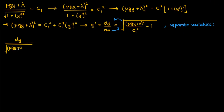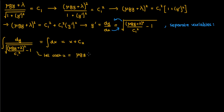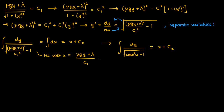After separating variables and integrating, the right-hand side gives x plus c2, where c2 is another integration constant. The left-hand side is more tedious to integrate, but we can use a convenient substitution: replace (mu g y plus lambda) over c1 by cosh u. Differentiating this substitution gives dy equals c1 sinh u over mu g times du. Substituting dy into the integral, we use the hyperbolic trig identity that the square root term becomes the hyperbolic sine of u.